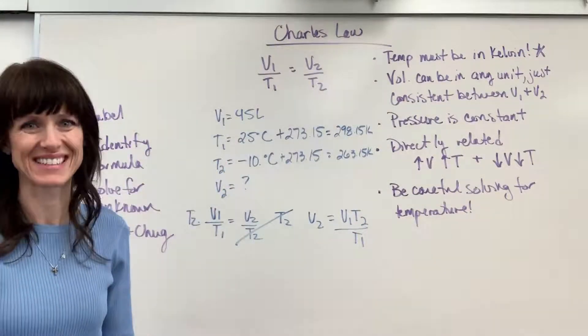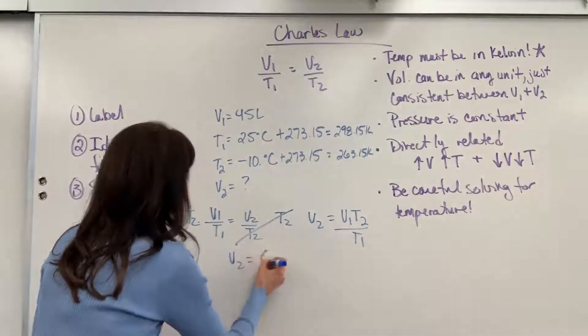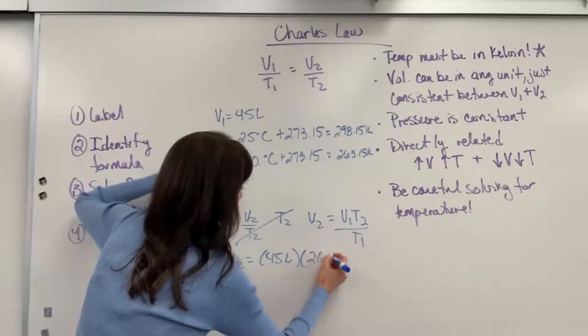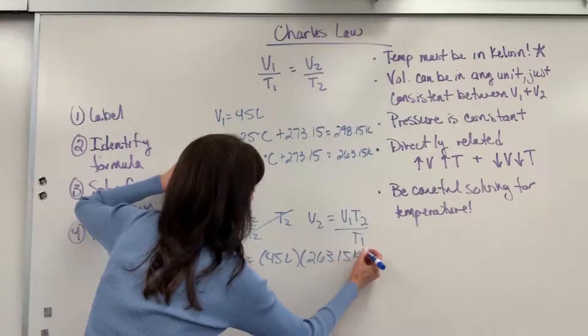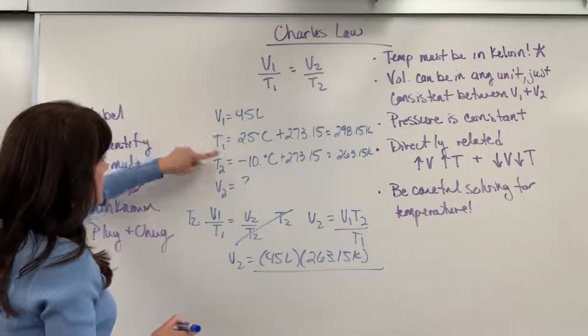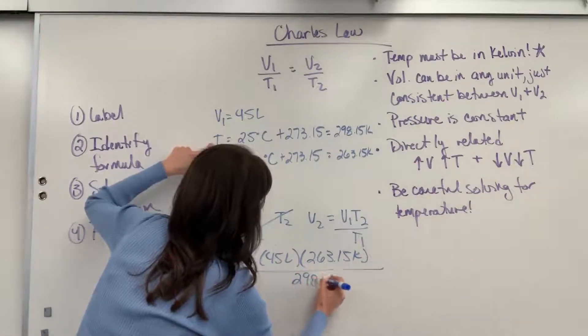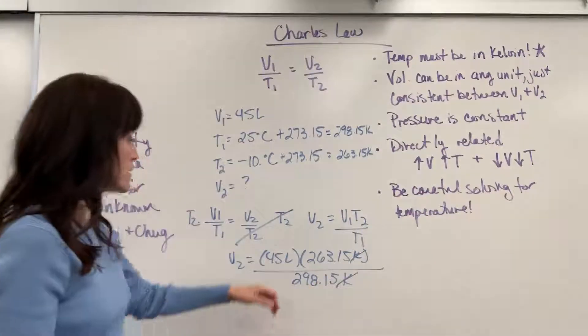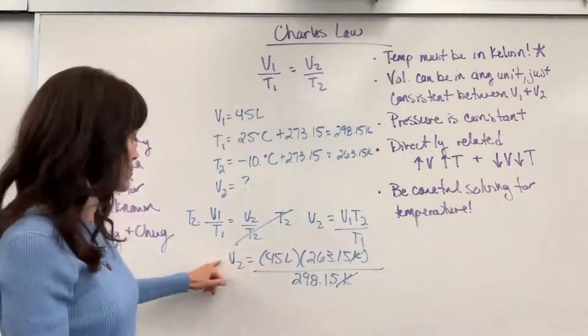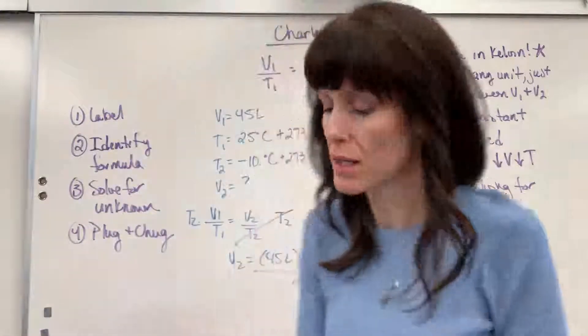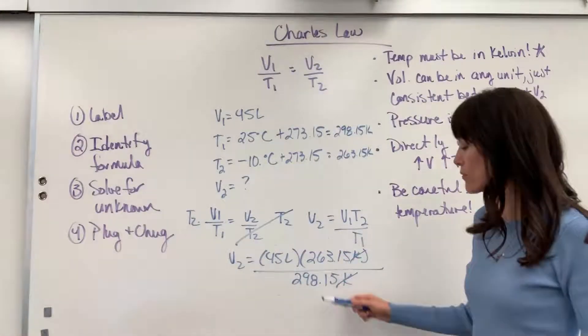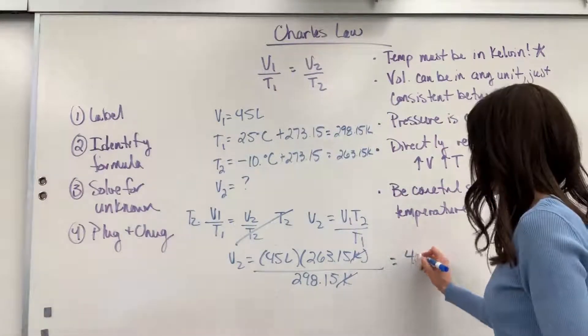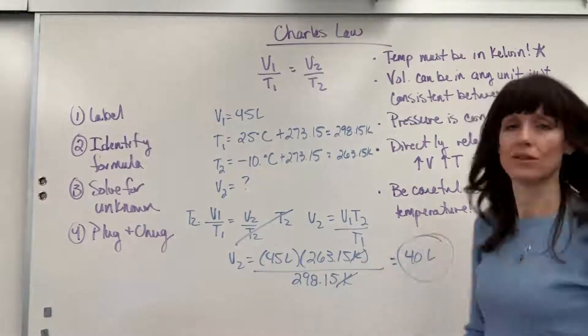Now, here's the fun part. It's a plug and check. So V2 is going to equal V1, there's my 45 liters times the T2, which was 263.15 Kelvin divided by my T1, which is 298.15 Kelvin. Always look at your units. Kelvin and Kelvin cancel. I'll be left with liters. That's what we wanted. So when you multiply these two numbers, 45 times 263.15 divided by 298, I have two sig figs all through here. We are going to get 40 liters will be the final volume.